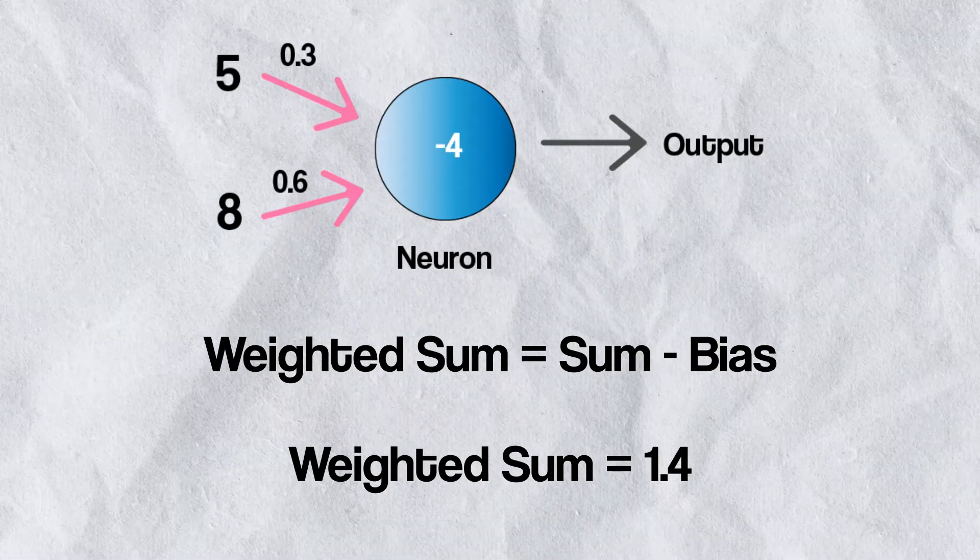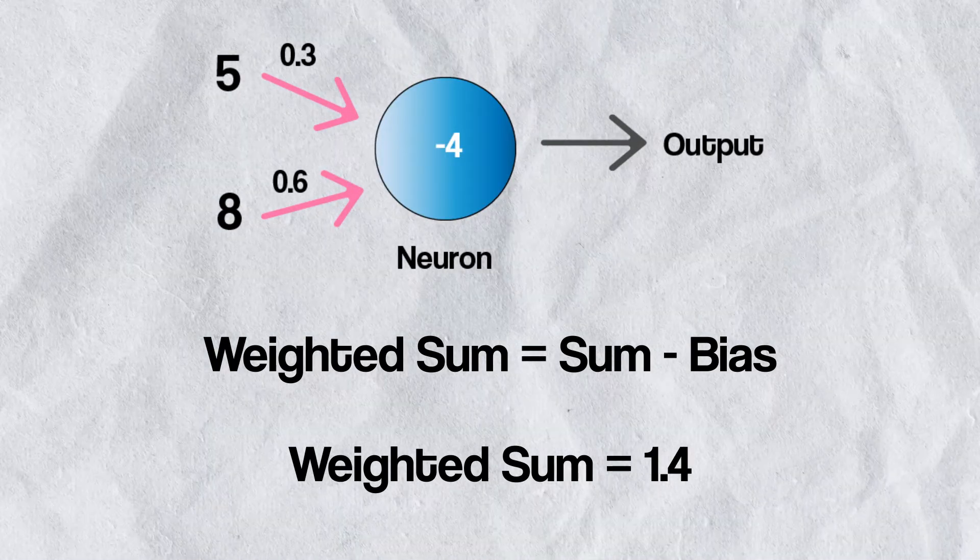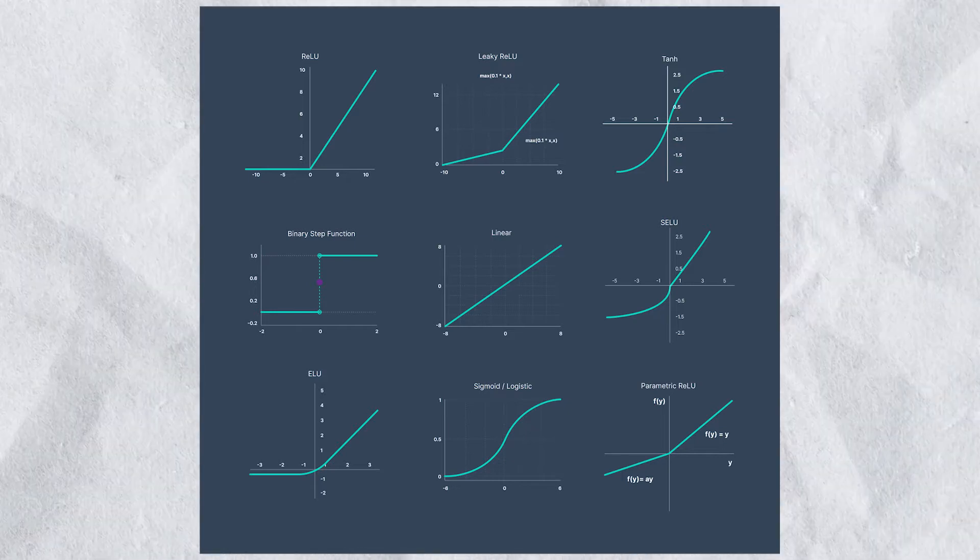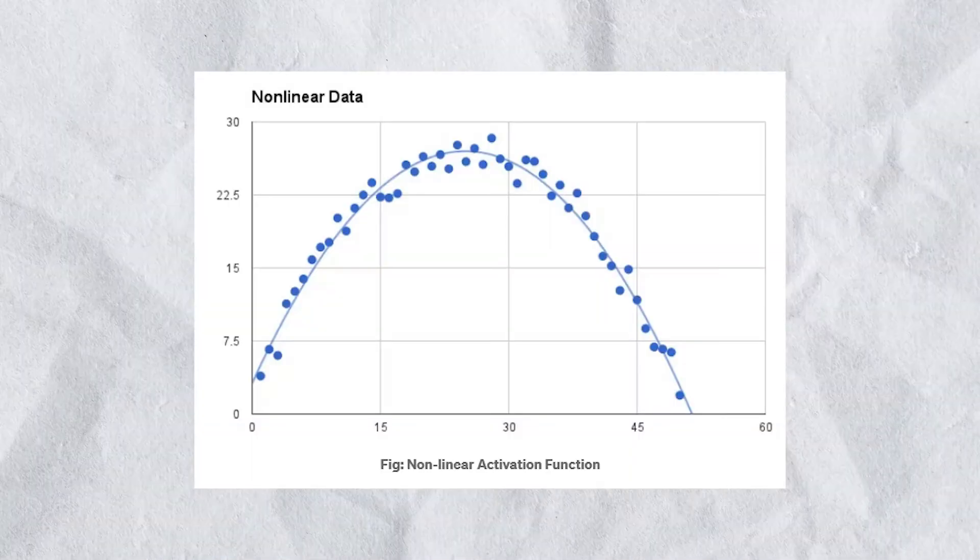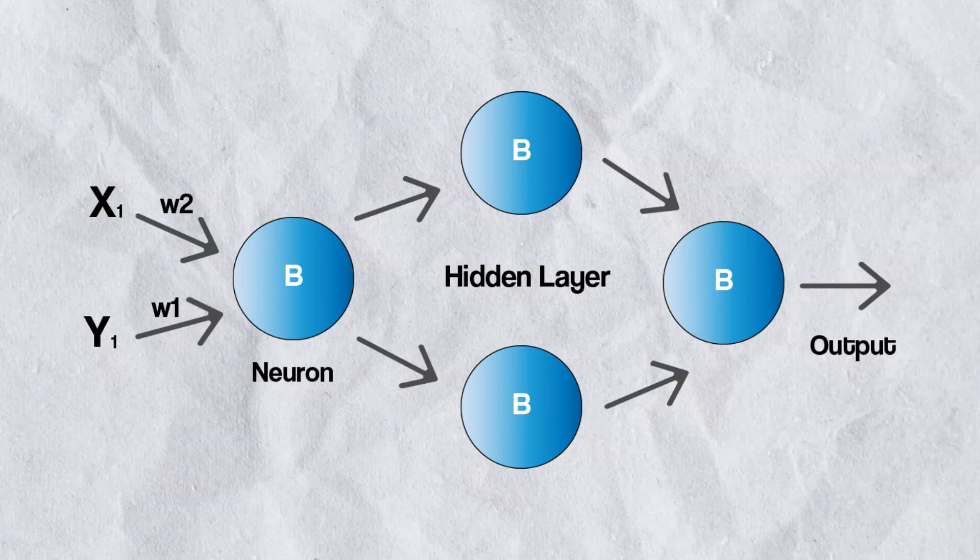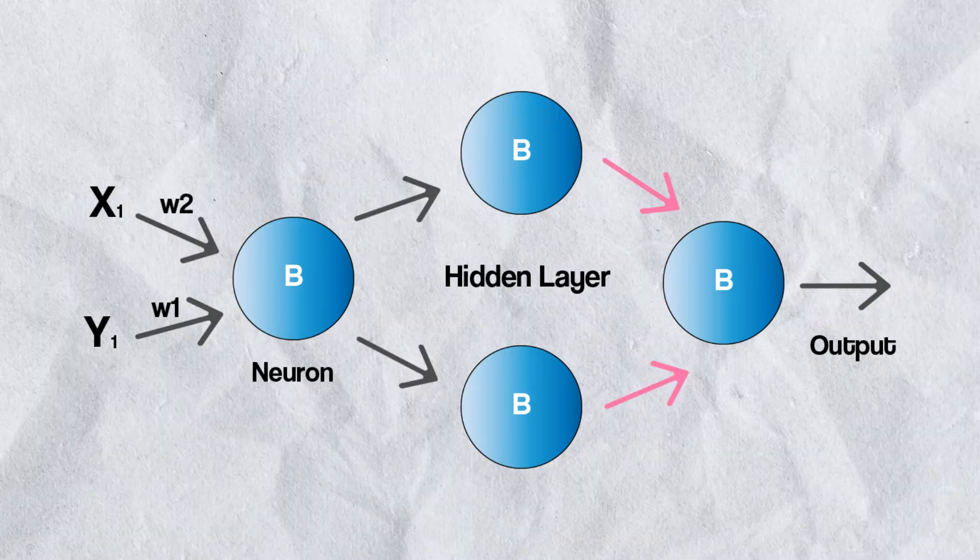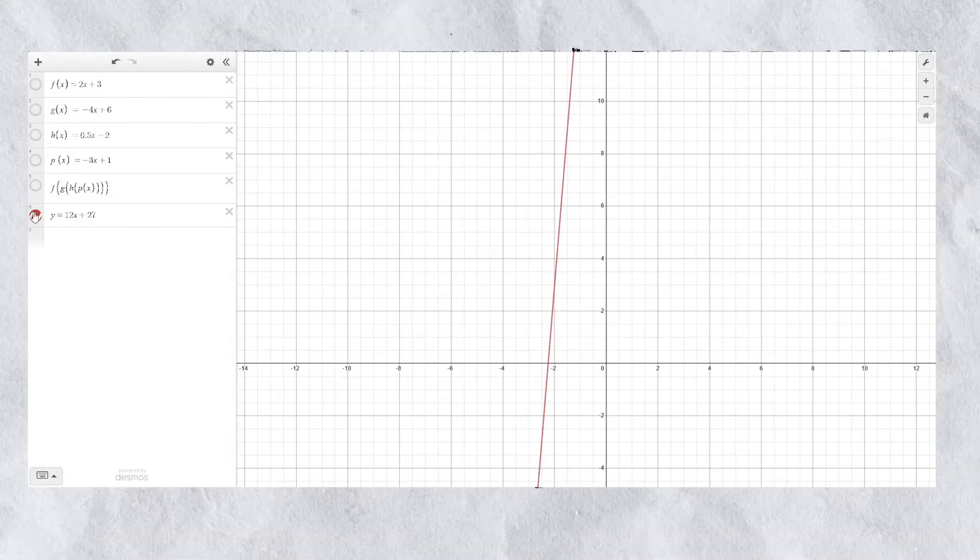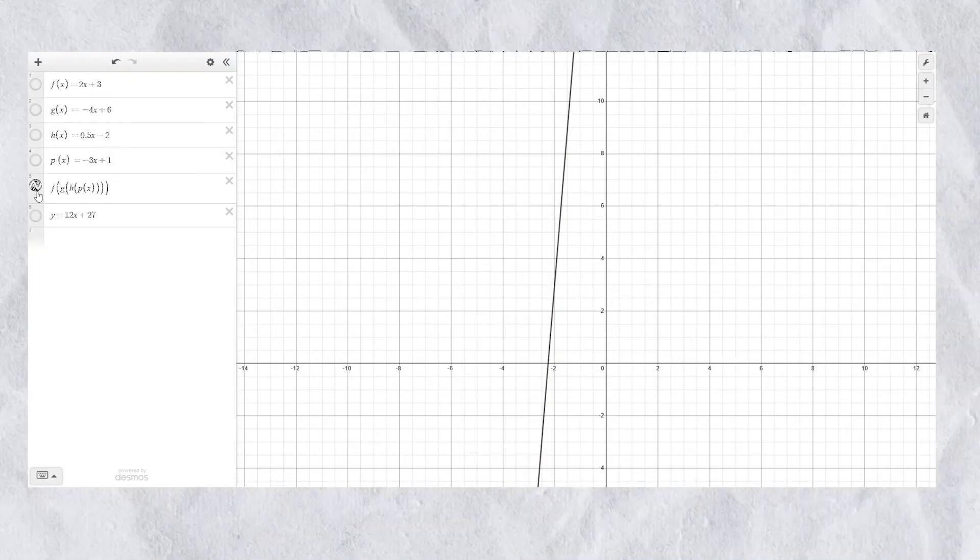Next, all the weighted inputs are added together with a bias. Finally, this now weighted sum is passed through an activation function. The reason we use an activation function is to make the neuron non-linear. Think about it. If there was no activation function, then the entire neural network would be simplified into a series of linear functions, and we would never be able to fit any complex data.